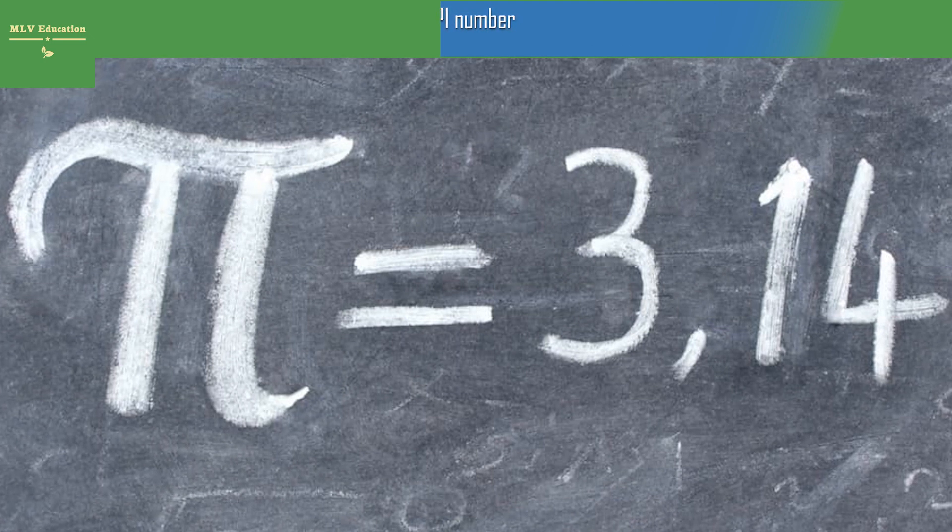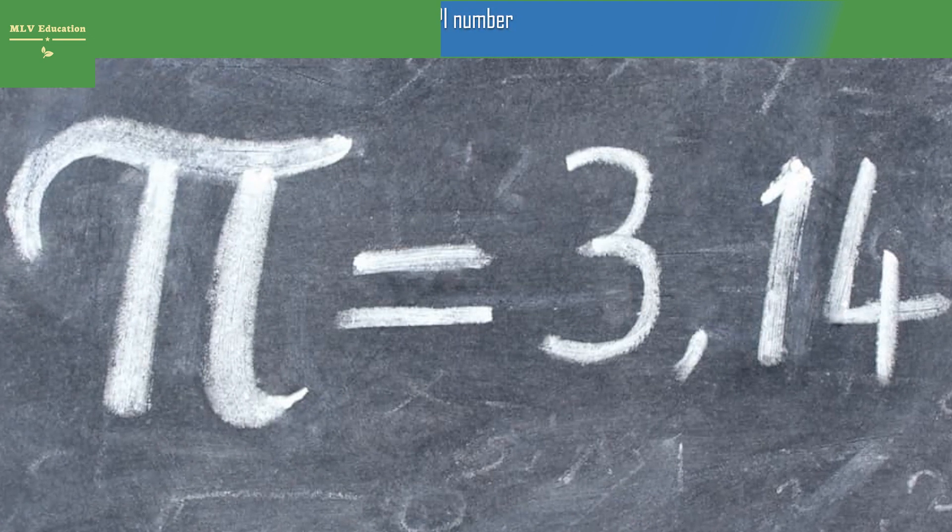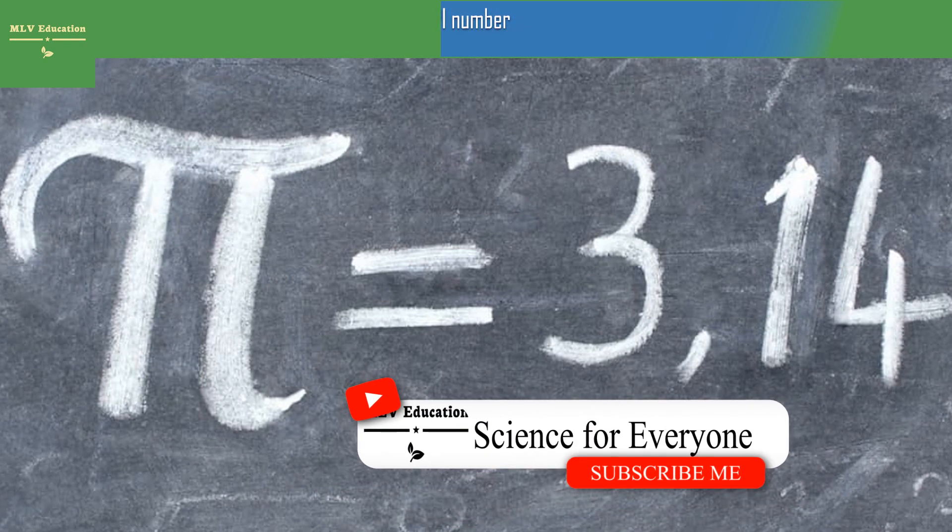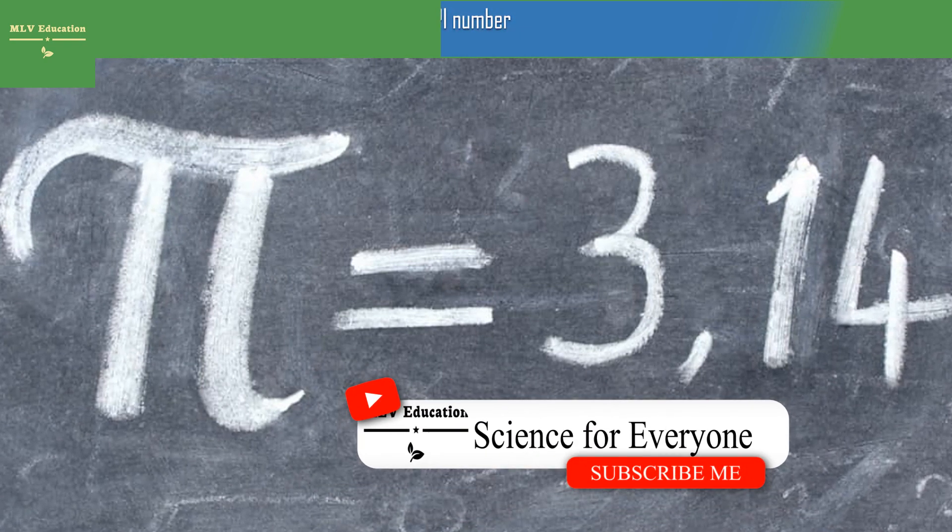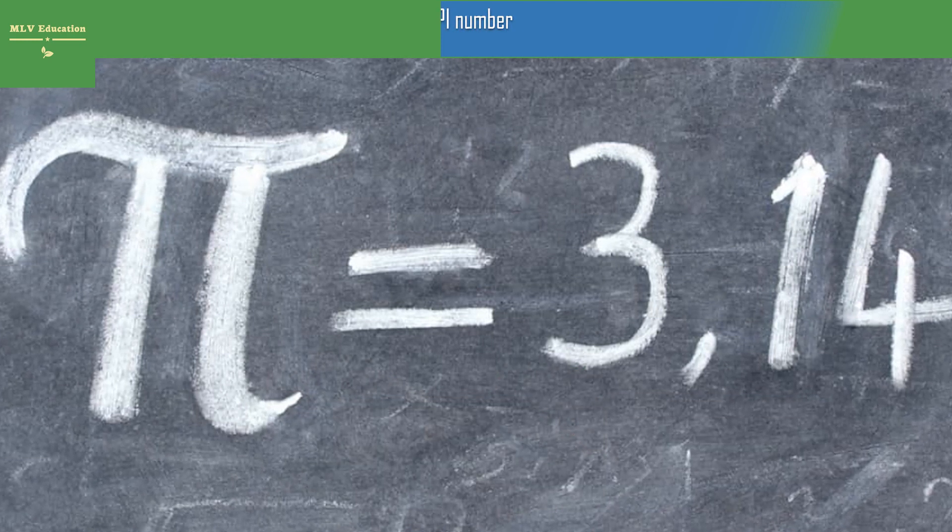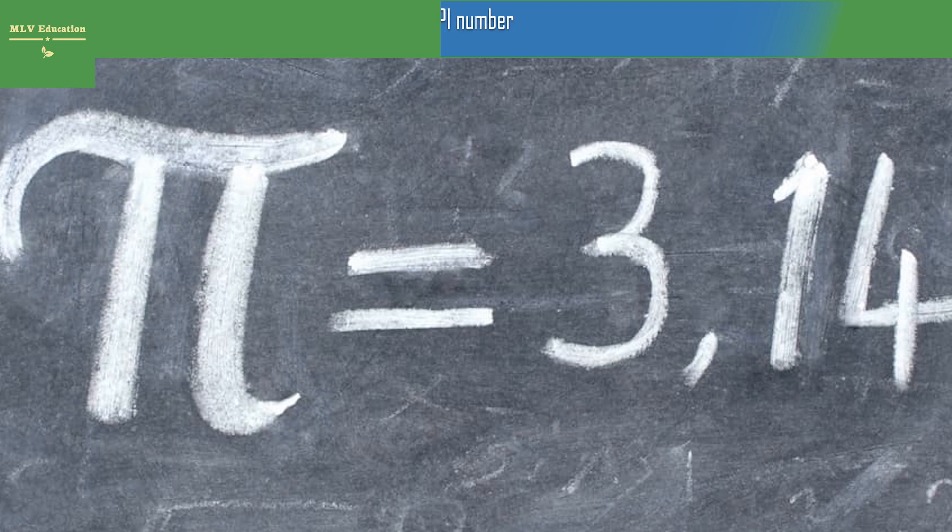High number! Everyone learns at school that the number Pi has the value 3.14, that it represents the ratio between the circumference and the diameter of a circle, that it is a constant used in various mathematical formulas in physics and engineering. But nobody, or very few, know how much passion and how many controversies this number has sparked over time.